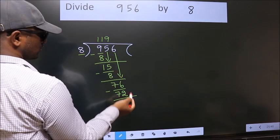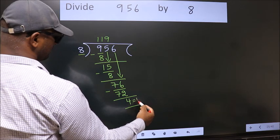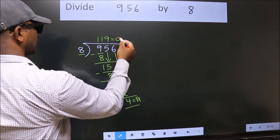No more numbers to bring it down. So, we stop here. This is our remainder. This is our quotient.